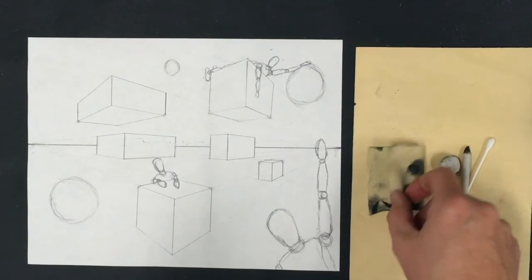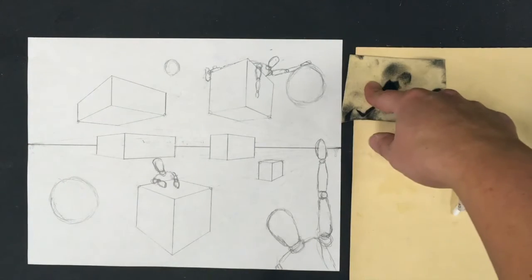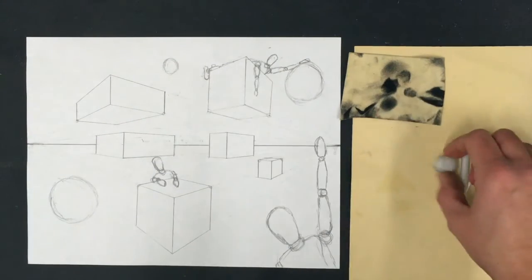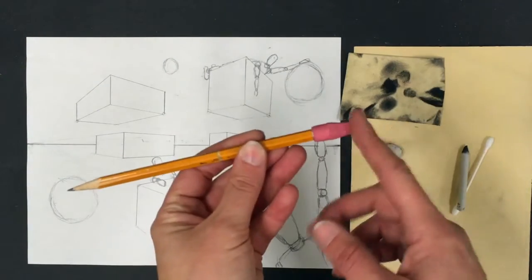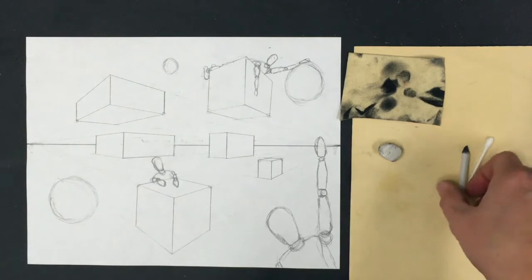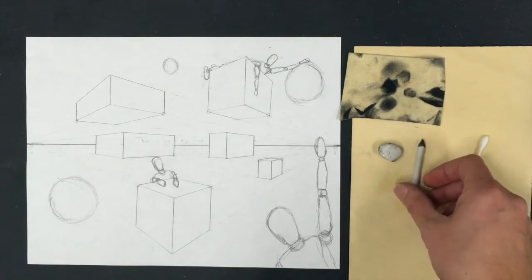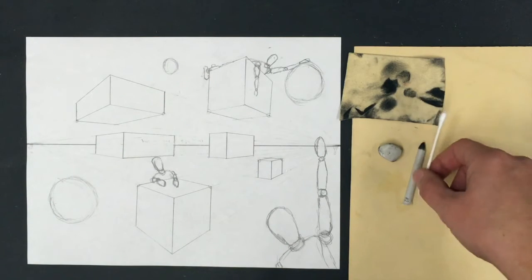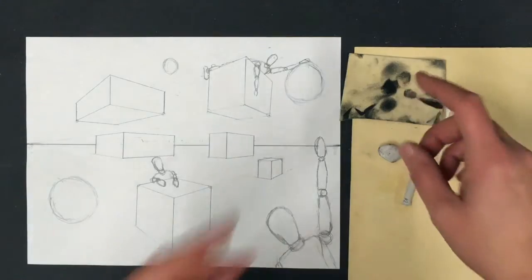You're gonna need your shading tools. I recommend a chamois cloth, if you don't have that, tissue or paper towel will work great. An eraser, a regular wooden number two pencil, a tortillion, and a q-tip. If you don't have a tortillion, a q-tip or twisted paper towel will work.